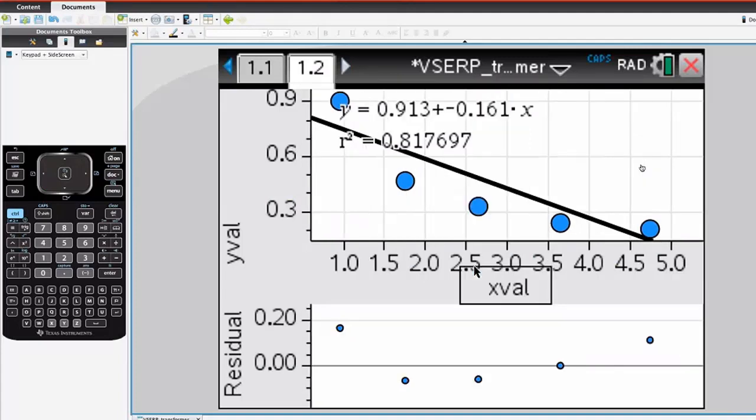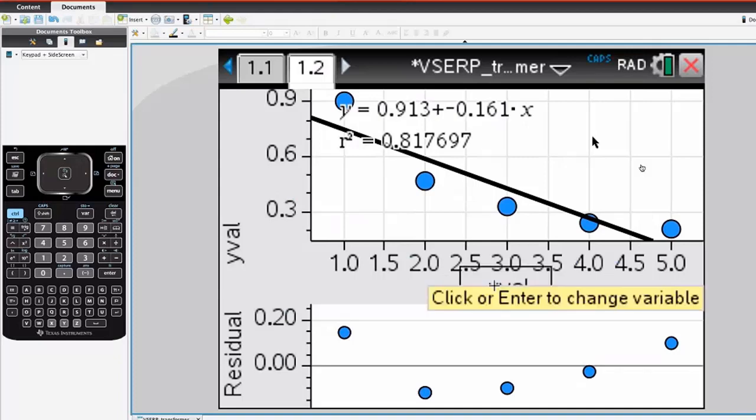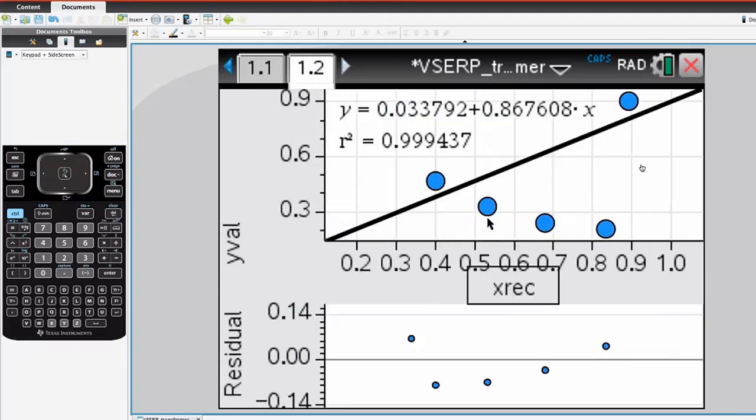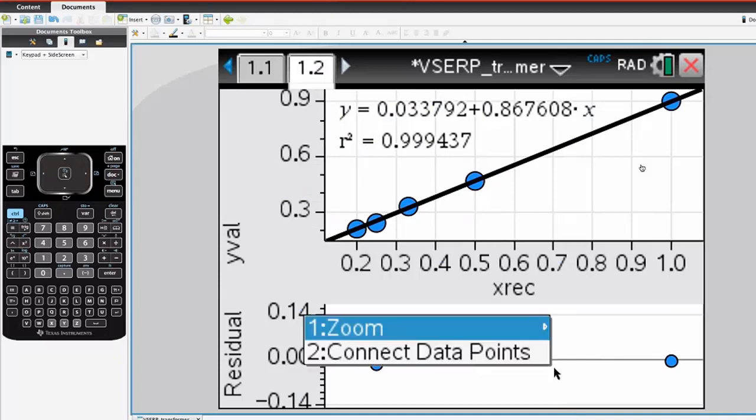That's the original Y versus X. That doesn't look to be particularly good. Let's try the reciprocal of X. We could have tried the reciprocal of Y. And you'll notice that, again, we'll zoom to make sure the residuals are showing well.